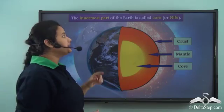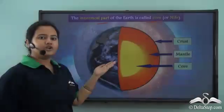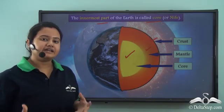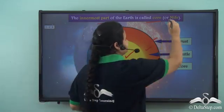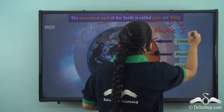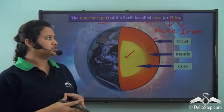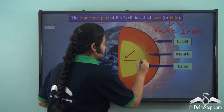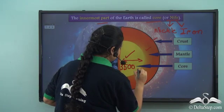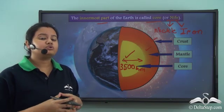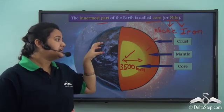The central part or innermost layer of the Earth is called the core. It is present below the crust and mantle. The core is rich in minerals like iron and nickel, so another name for the core is Niphe — where Ni stands for nickel and Fe stands for iron. The core is very dense with high temperature and pressure — it is like a superheated dense ball at the central part of the Earth. Its radius is approximately 3500 kilometers.